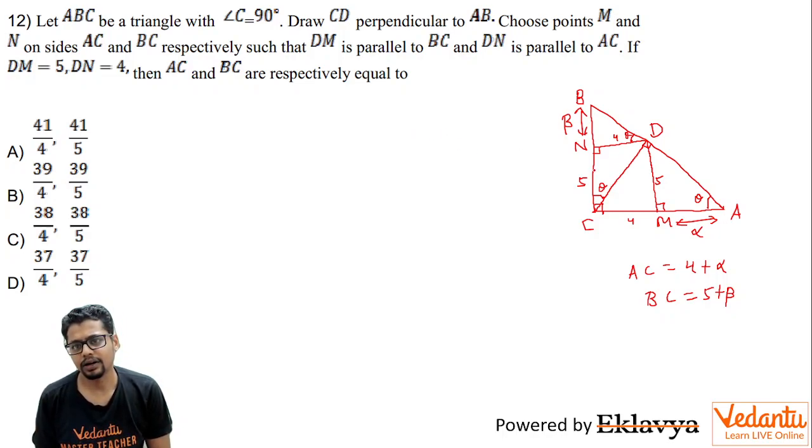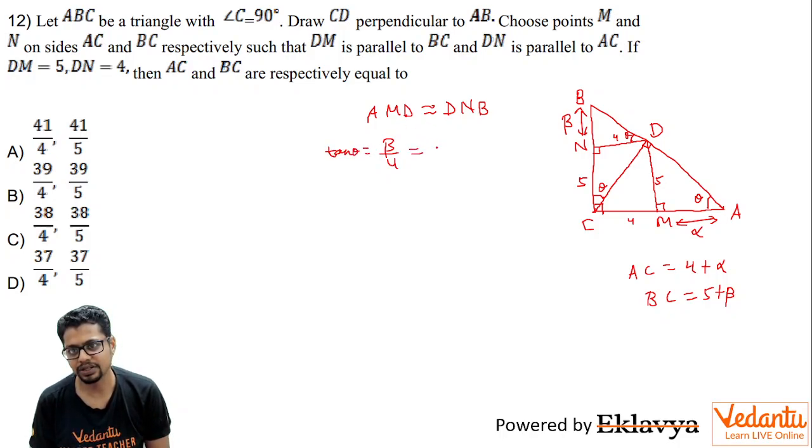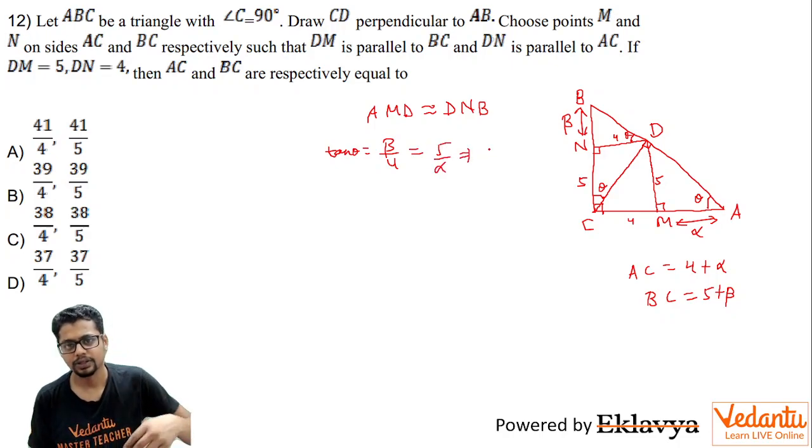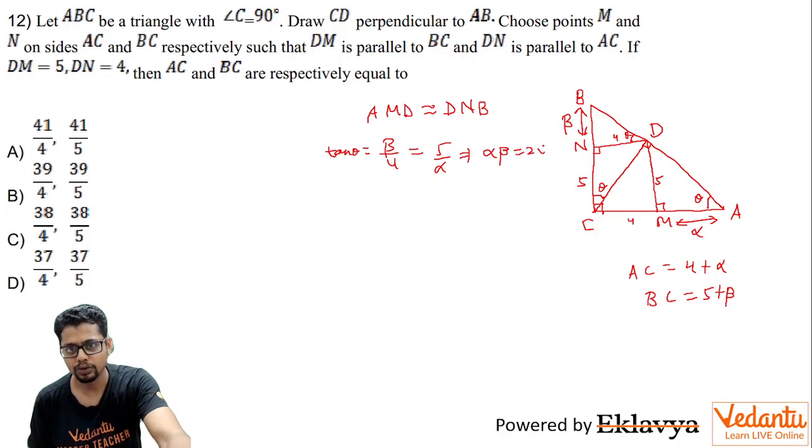Now, you may say that first of all, if you consider triangle AMD and DNB, they are similar triangles. So you can say beta—or you may say tan theta. You may compare tan theta is beta by 4. Or you may go by similar triangles also. So beta by 4 is essentially 5 by alpha. So what you get is alpha beta equals 20.